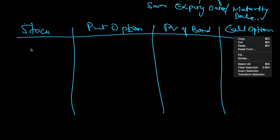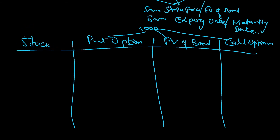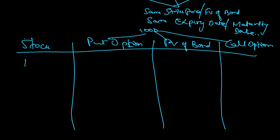Suppose all three have a strike price of 1000, and today is the expiry date. The stock is trading at 1500 — let's say ICICI is trading at 1500. So in that case, what will be the value of the put option?